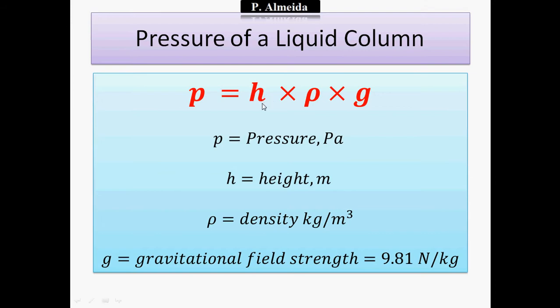Rho, this symbol that is not a P, is the density of that liquid in kilograms per meter cubed. G is the gravitational field strength, which is 9.81 Newtons per kilogram. Of course, if I would be doing this experiment on the moon instead of getting G to be 9.81, I would have G to be 1.6.